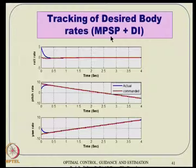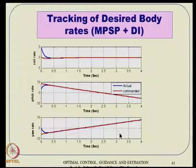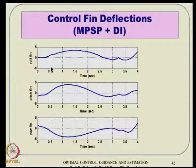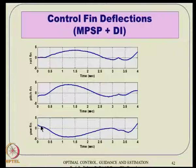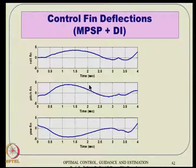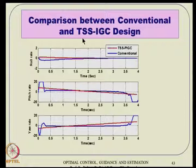The inner loop tracks the desired dynamics very quickly — consistent with the 0.4-second settling time assumed. Fin deflection profiles are very smooth with no singularity issues, and the magnitudes stay within approximately ±5 degrees, far below the ±20 to ±30 degree physical limits. The scaling from T0 to Tf is such that demand does not become very high towards the end, which typically happens in conventional designs.